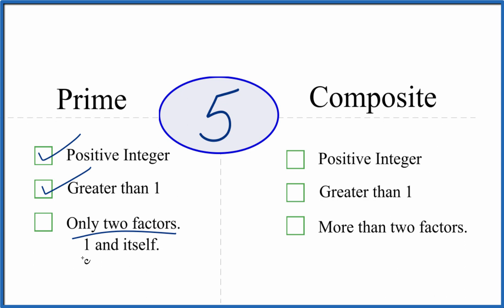And are there only two factors, 1 and 5, that divide evenly into 5? So we know 1 times 5, that equals 5. So there's 1, 2 factors.